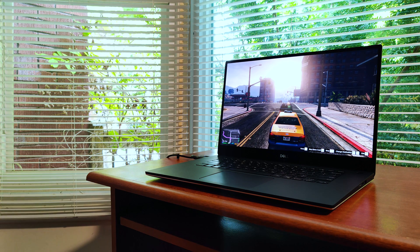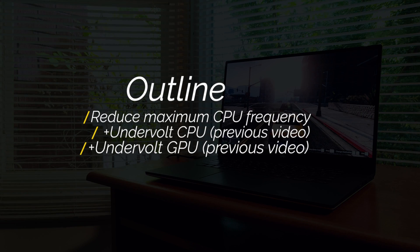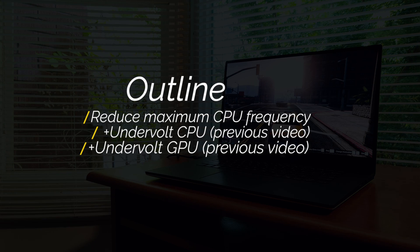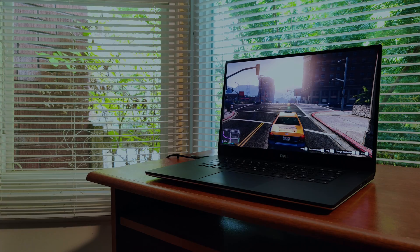So how are we going to increase FPS with this knowledge? We're going to reduce the maximum frequency for our turbo ratio limits, essentially running our CPU at a much lower frequency. This helps increase FPS because by limiting our CPU to run at a lower frequency, we are freeing up more of our laptop's thermal cooling capacity, thus giving the GPU much more space to fully max out its performance and FPS in games.